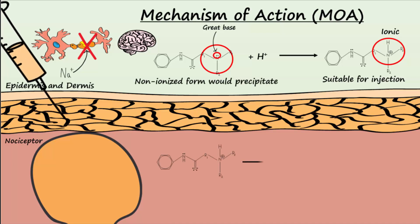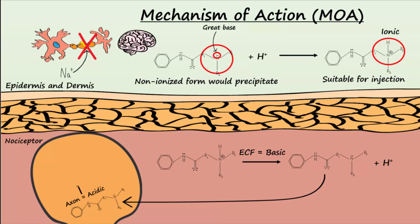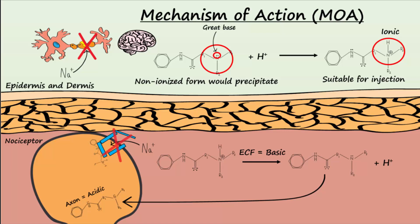Once the protonated drug is injected, it dissociates due to the extracellular fluid being basic. Then the neutral compound passes through the plasma membrane and into the acidic intracellular space of the neuron, where it is protonated once again. Sodium voltage-gated channels normally allow sodium to enter the neuron so that action potentials can be propagated. The protonated ionic local anesthetic binds to the inactivation gate of the sodium channel, keeping it closed, preventing sodium from entering the cell. Hence, depolarization does not occur and action potentials cannot be propagated.